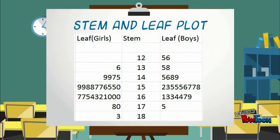The data we have collected has been sorted into a back-to-back stem and leaf plot. As the stem we have 12 to 18, representing 123 to 180. On the left we have the girls and on the right we have the boys. From this plot we can see that girls are most dominant in the 160cm and 150cm leaf, and the boys are more dominant in the 150cm leaf.